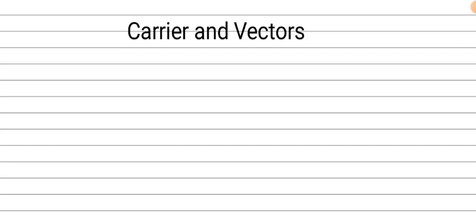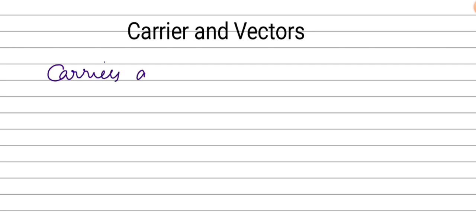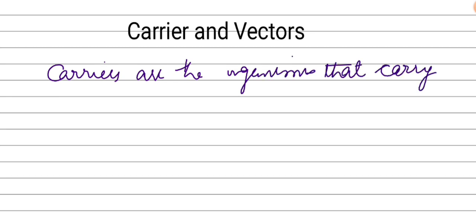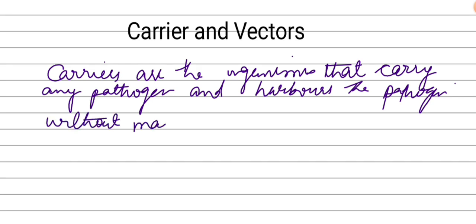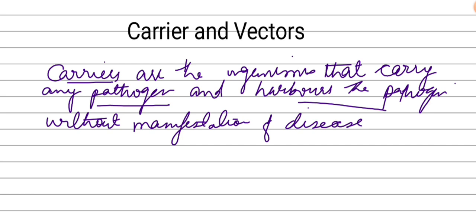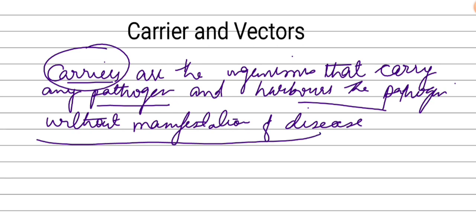So to begin with, if we talk about carriers — carriers are organisms that carry any pathogen. They carry and harbor the pathogen without manifestation of disease. So basically, carriers are harboring and sheltering pathogens but they are not carrying any disease themselves. If they were carrying disease, we would consider them sick people.